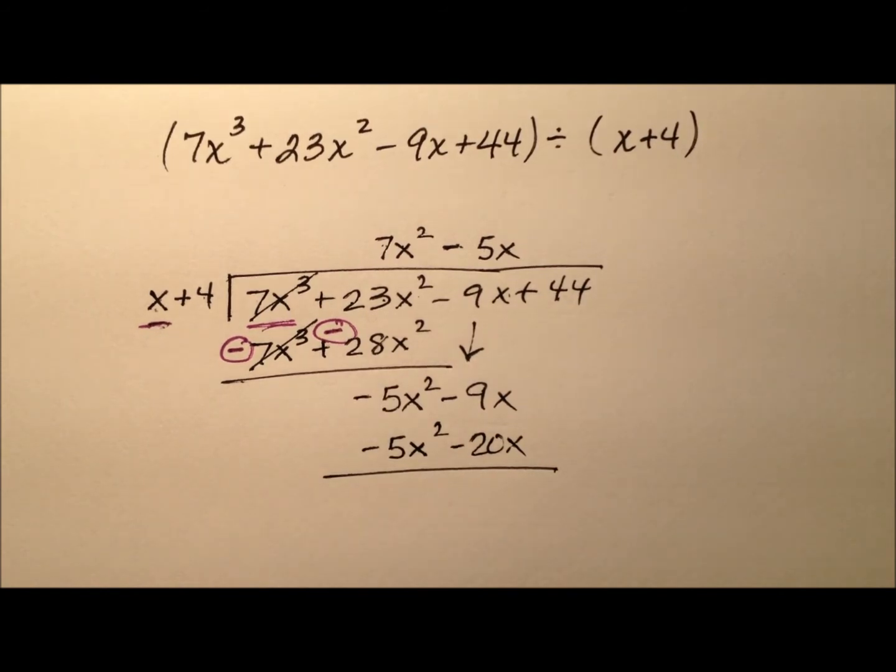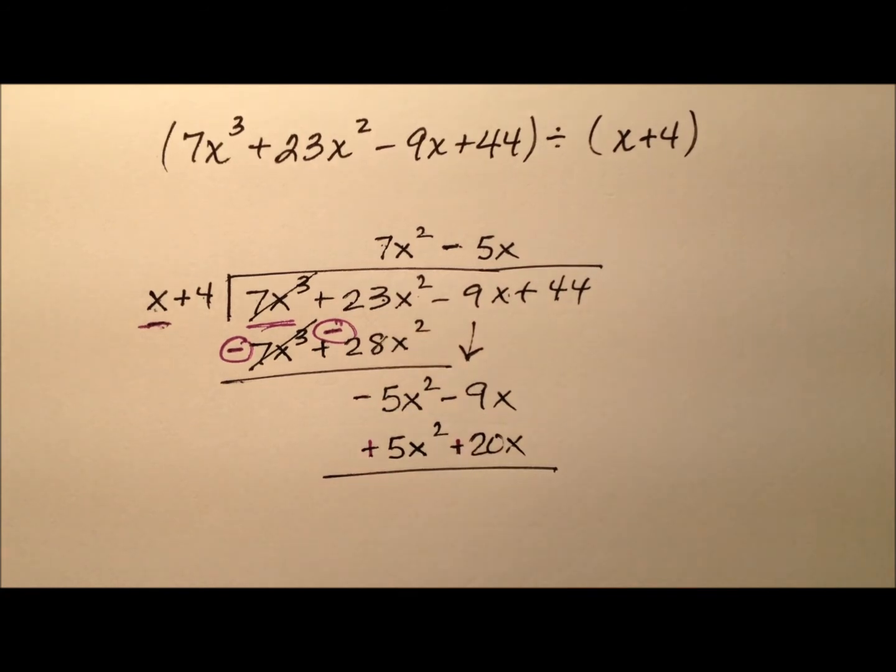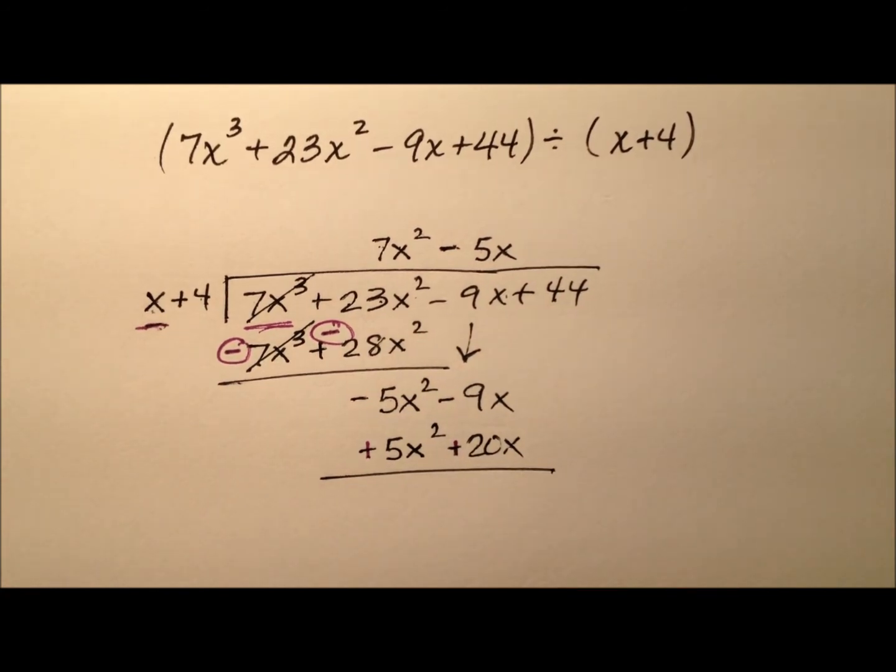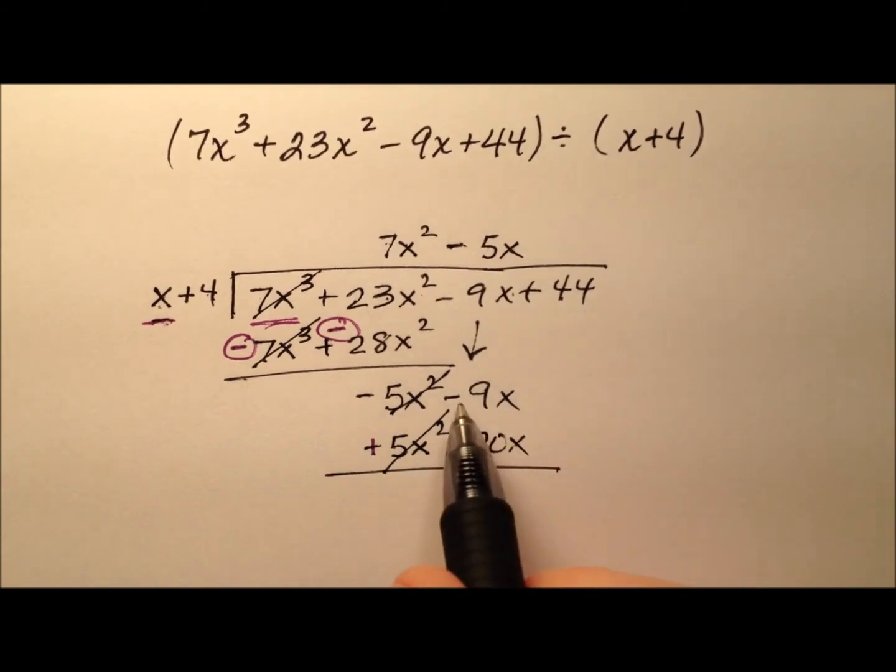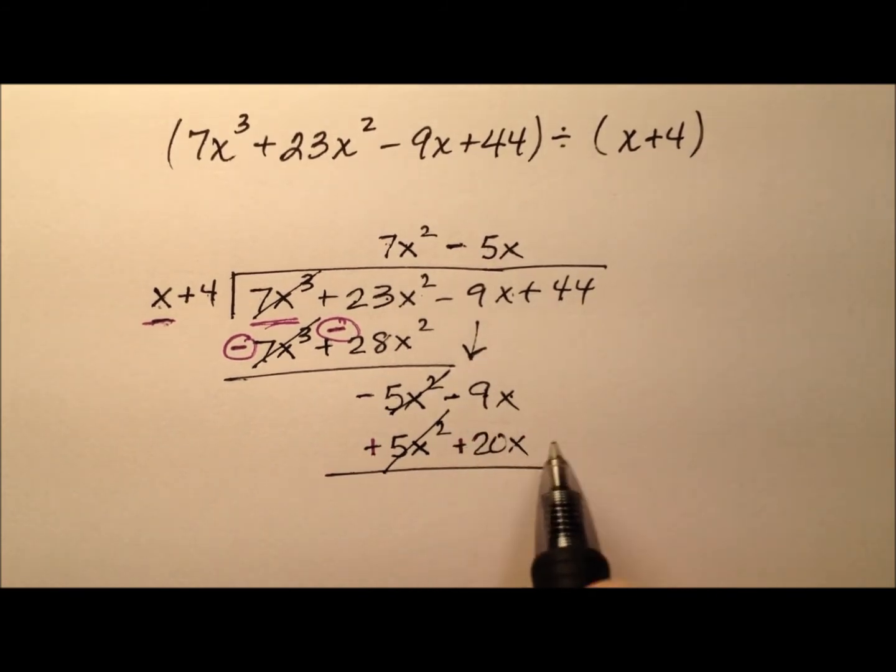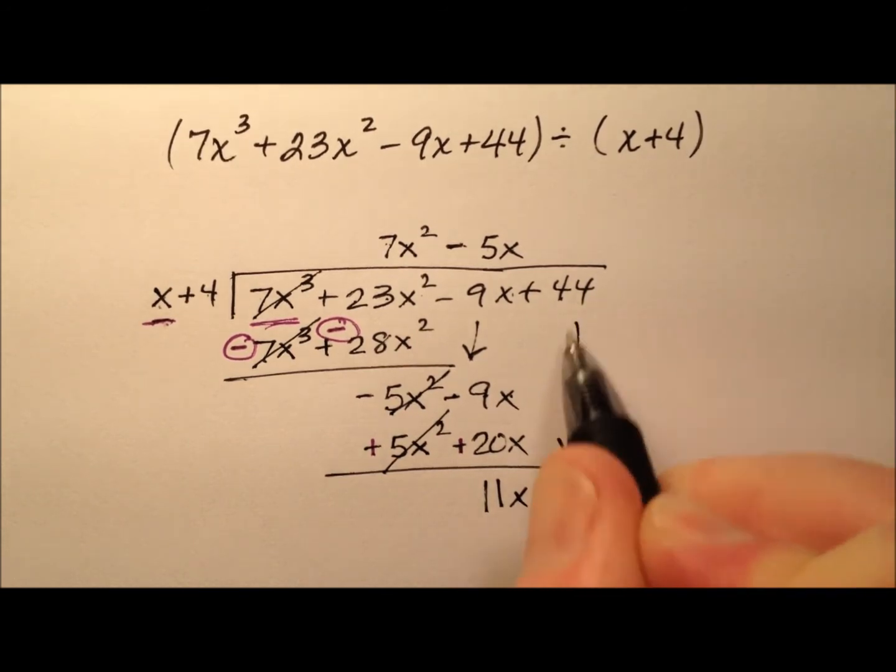Again, I'm subtracting here, so the way I'm going to subtract is by changing the sign and then adding. And you'll notice here that these lead terms will cancel, and again that's by design. And I have negative 9x plus 20x, and that'll give me 11x. And then for the last term here I'm going to bring down and say plus 44.